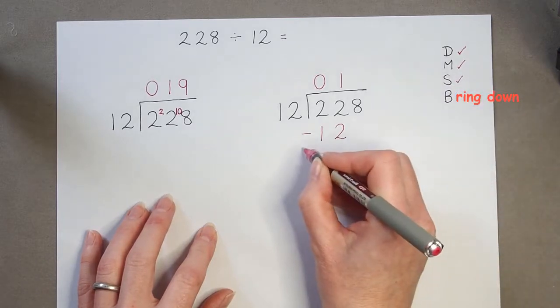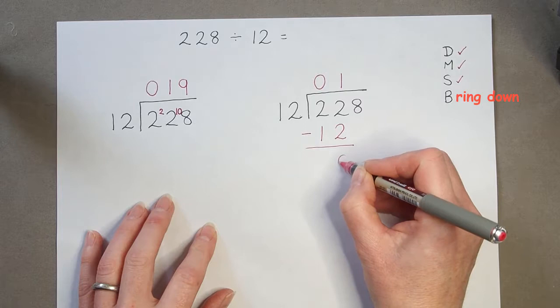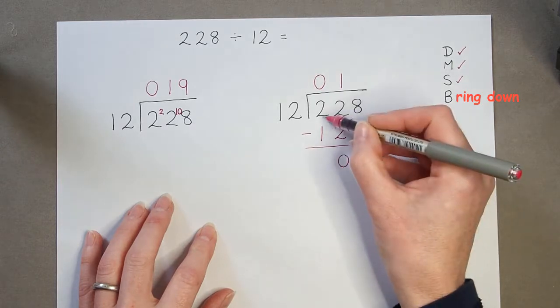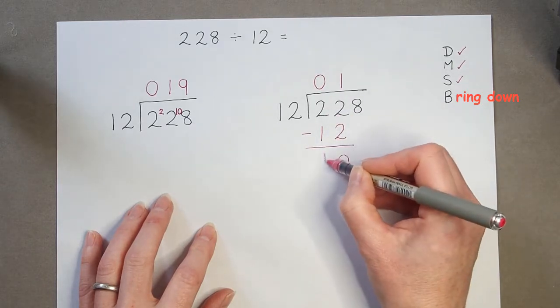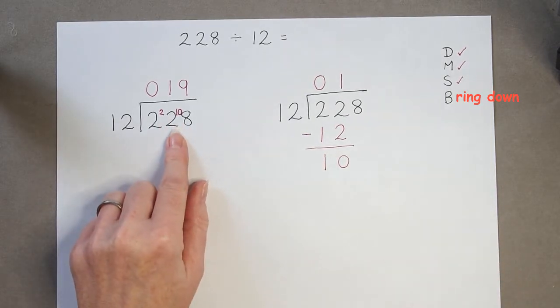So this is the subtraction done. 2 subtract 2 is 0, and 2 subtract 1 is 1. So, we've done exactly the same as we did in the short division.